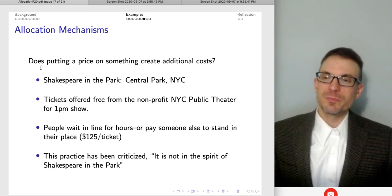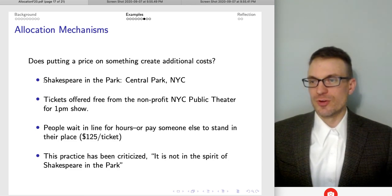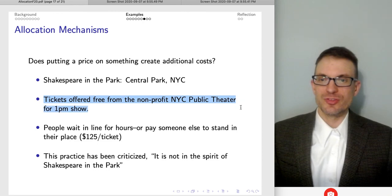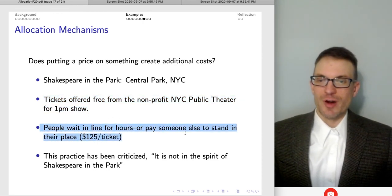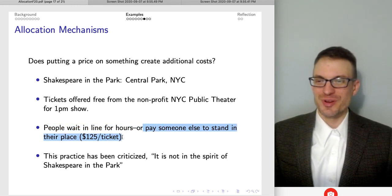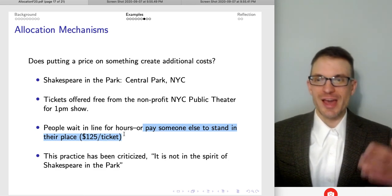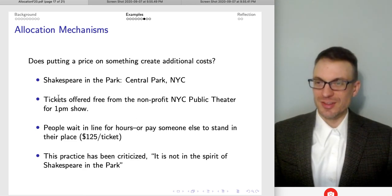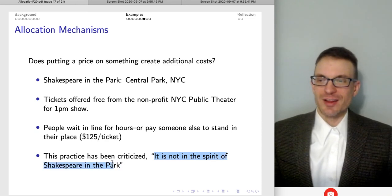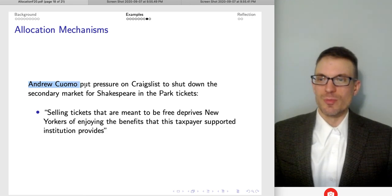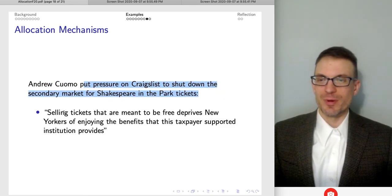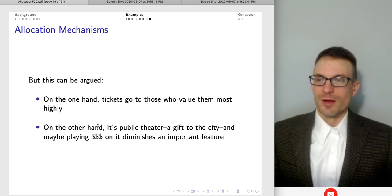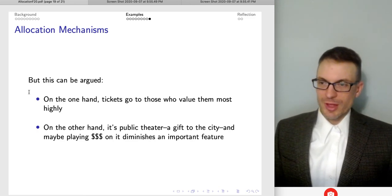So here's the example, Shakespeare in the Park from Central Park, New York City. Tickets were offered free from the non-profit New York City Public Theater for a 1pm show. People were waiting in line for hours, or they could pay somebody else to stand in their place, one hundred twenty-five dollars a ticket, maybe for having somebody being a line stander. And ultimately, there's some people not so happy with this practice of paying somebody else to wait in line to get free tickets. It's argued as not in the spirit of Shakespeare in the Park. In particular, Andrew Cuomo put pressure on Craigslist to shut down the secondary market for Shakespeare in the Park, saying selling tickets that are meant to be free deprives New Yorkers of enjoying benefits that this taxpayer-supported institution provides.